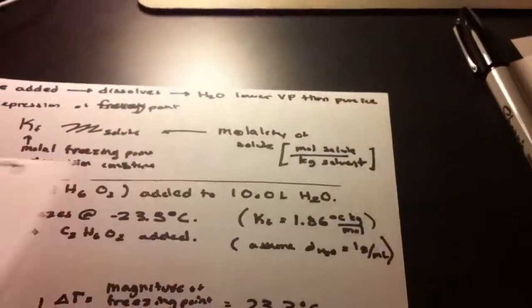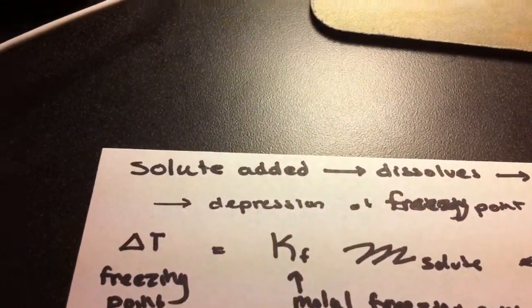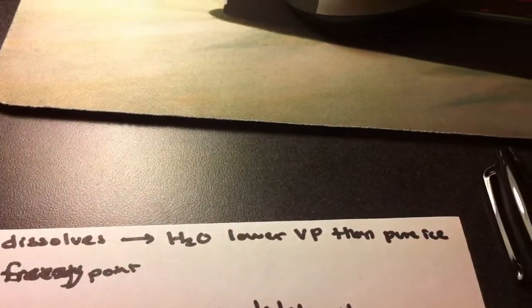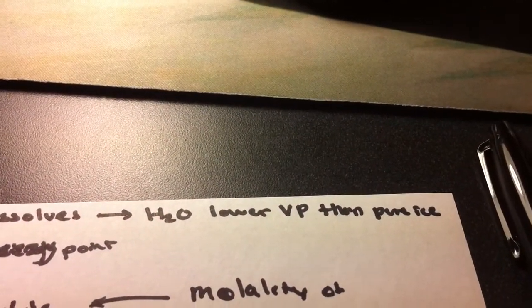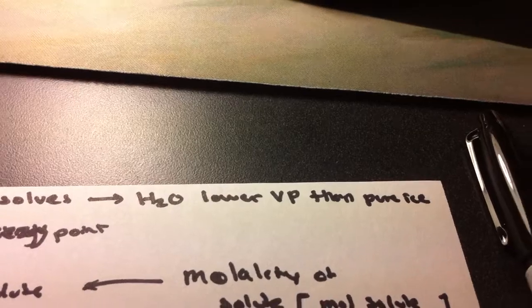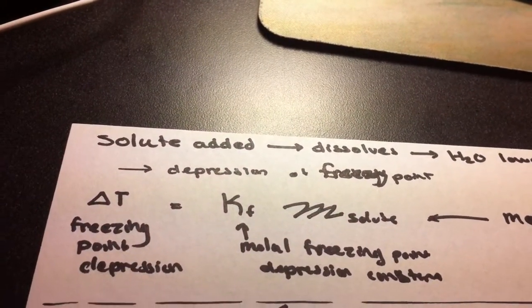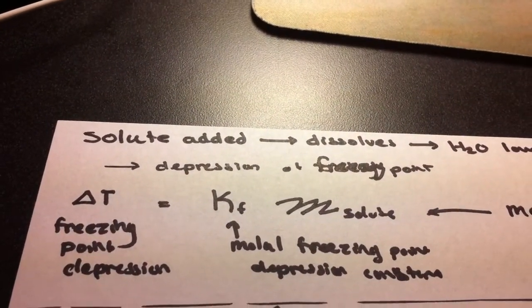If we want to talk about freezing point depression, it's basically just adding a solute, having it dissolve, and the result is H2O having a lower vapor pressure than pure ice, which of course ends up with a lower freezing point.